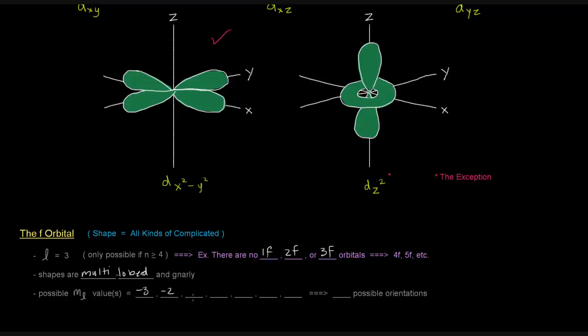The possible m sub L values are negative 3 to positive 3. So negative 3, negative 2, negative 1, 0, positive 1, positive 2, positive 3. So there are 7 f orbitals, which means there are 7 possible orientations in 3D space.